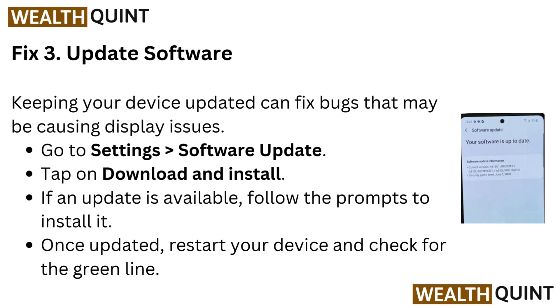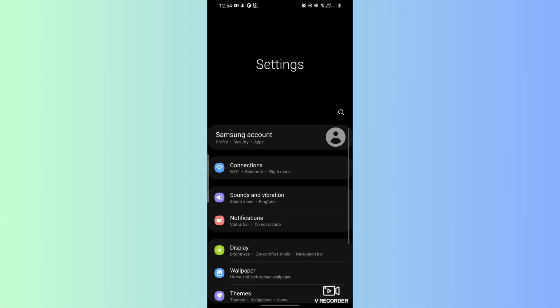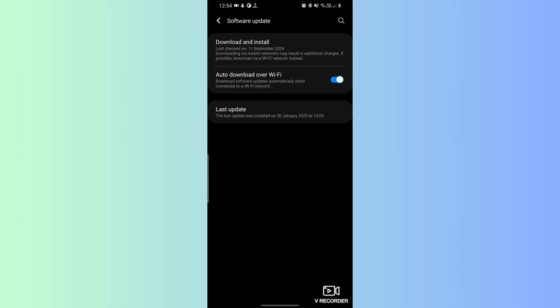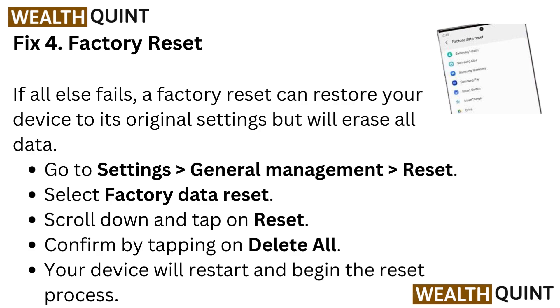Fix three: Update software. Keeping your device updated can fix bugs that may be causing display issues. Go to Settings, then Software Update, tap on Download and Install. If an update is available, follow the prompts to install it. Once updated, restart your device and check for the green line.